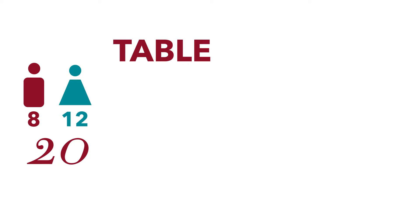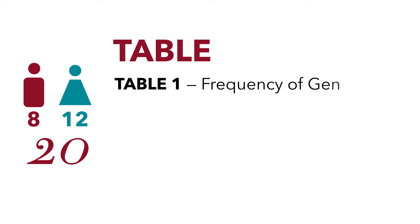How do we create a table that displays this information effectively so readers can get something out of it? We're going to start with the table and display all of our information. I'm going to create a table here, and I'm going to call it Table 1. I'm just going to call it Frequency of Gender. As we'll see here in a moment, every table needs a title.